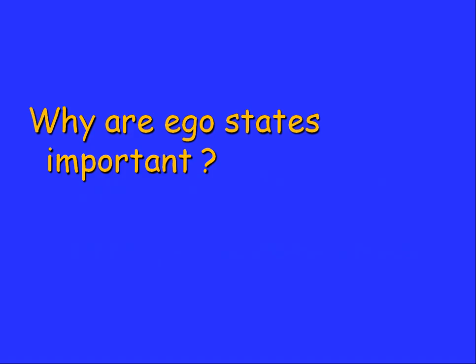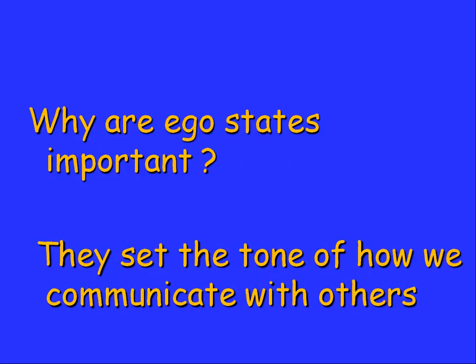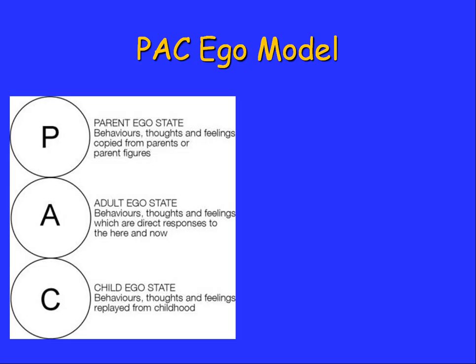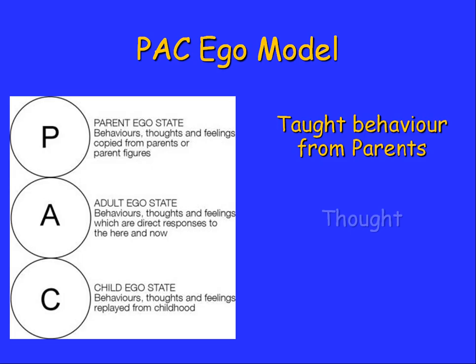Why are ego states important? They set the tone of how we communicate with others. Berne came up with what's called a PAC ego model — parent, adult, and child. The parent ego state is behaviours, thoughts, and feelings copied from parents or parental figures — it's taught behaviour. The adult ego state is thought behaviour, where we react in a mature state, not clouded by how our parents may have reacted, working in the here and now.